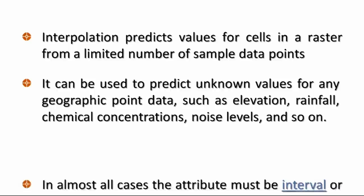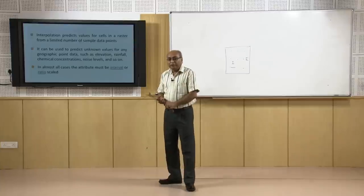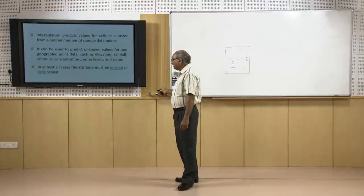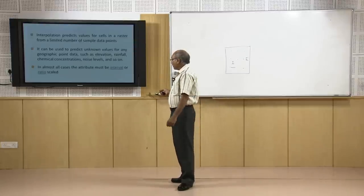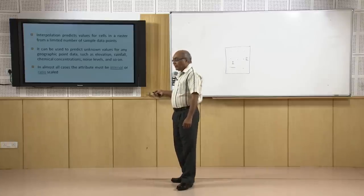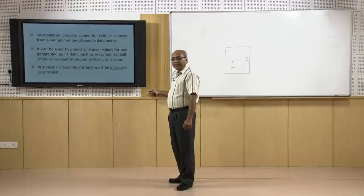In almost all cases the attribute must be interval or ratio. For cyclic data, counts and amounts, or nominal data, interpolation cannot be done. You need to have either interval data or ratio data to perform interpolation.